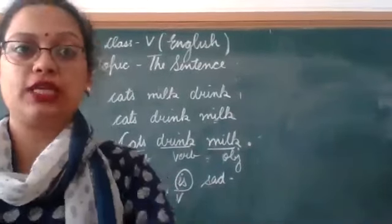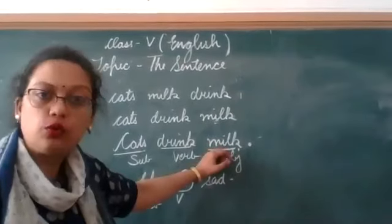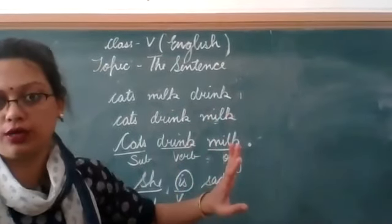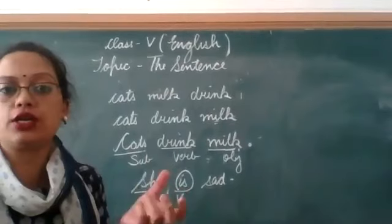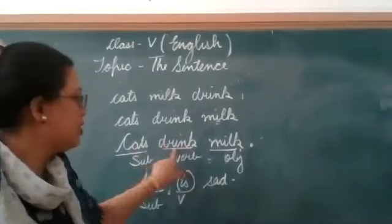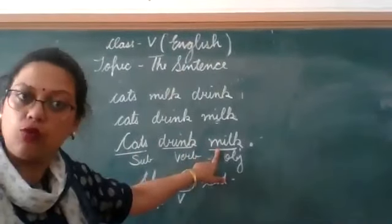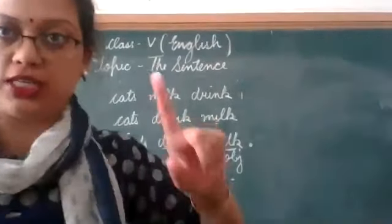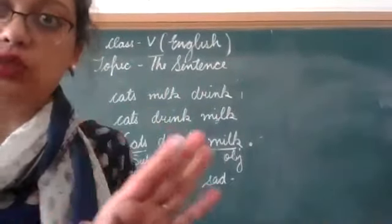The object can be a noun or it can be a pronoun, and what question does it answer? 'What' or 'whom.' For example, 'cat brings what? Cat brings milk.' 'Milk' answers the question 'what' — that is called an object. Clear to everybody? What is object?